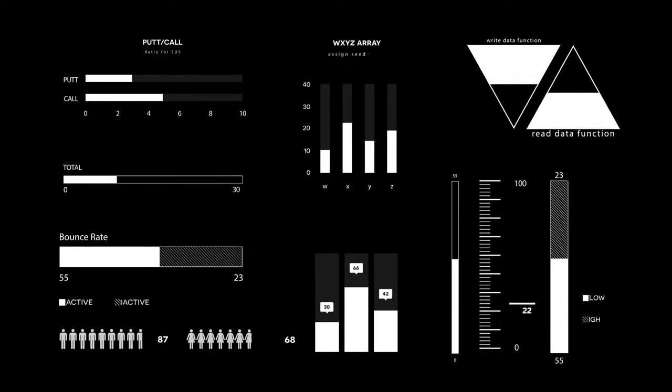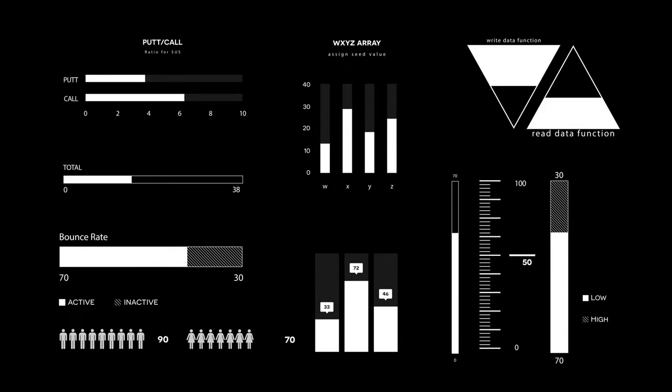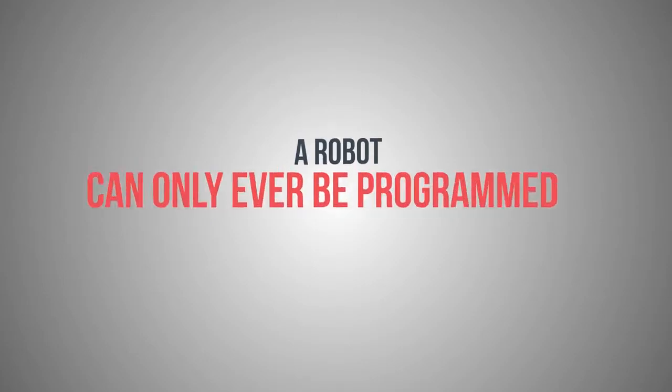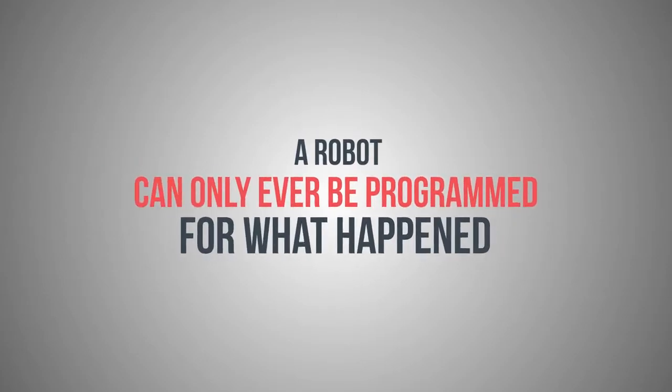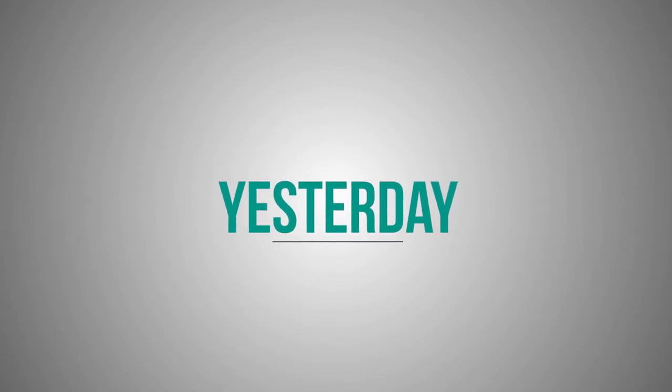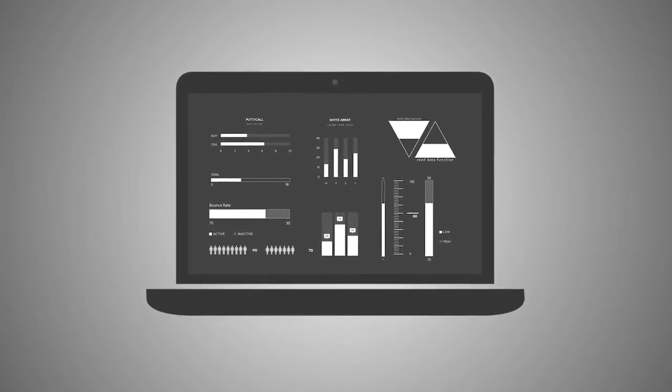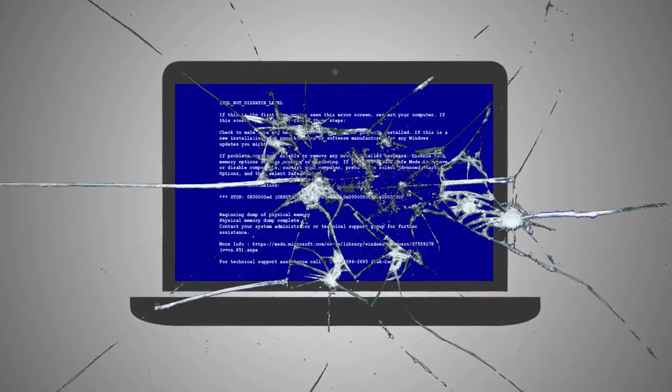The reason why is very simple. When a robot is programmed, no matter how thorough the programmers are in their selection of the patterns to use, the parameters of casualty, the risk versus reward, everything, there's one very important thing about robots that is impossible to change. That is, that a robot can only ever be programmed for what happened yesterday. Yes, certainly a mighty flaw, wouldn't you say? There is absolutely no way for a computer to know what to do when it is faced with a set of circumstances which it has never encountered before.